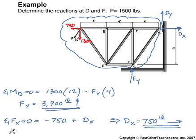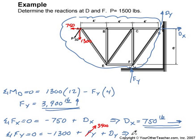And then the last thing is summation of forces in the Y equals zero. Over at A we have our negative 1300 plus F_Y plus D_Y. And we already know F_Y is 3900. So solving for D_Y, we actually would get a negative value here for D_Y. So that means the arrow is not up, but it should be down.